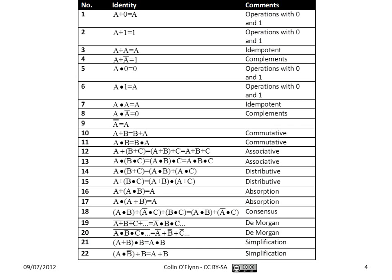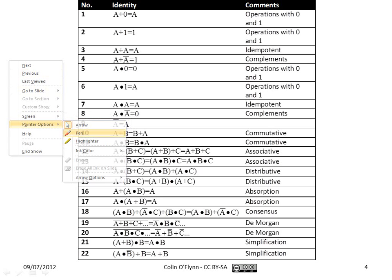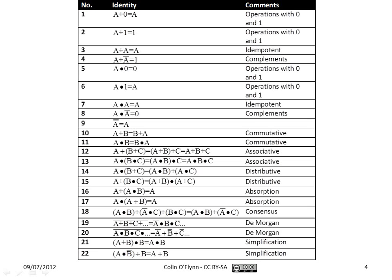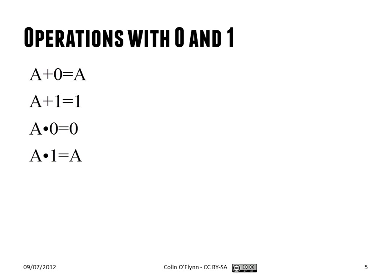Boolean algebra is basically how we simplify boolean equations, where boolean equations use boolean variables — variables that either have the value of true or false, or what we call zero or one, zero being false and one being true.